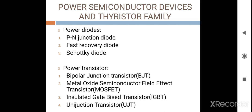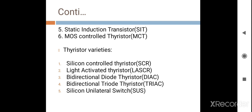In Power Semiconductor Devices, we consider Power Diodes — PN Junction Diode, Fast Recovery Diode, and Schottky Diode. In Power Transistors, we consider Bipolar Junction Transistor (BJT), Metal Oxide Semiconductor Field Effect Transistor (MOSFET), Insulated Gate Bipolar Transistor (IGBT), Unijunction Transistor (UJT), Static Induction Transistor (SIT), and MOS-Controlled Thyristor (MCT).